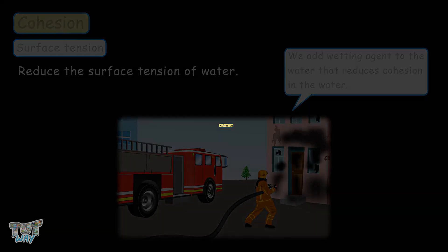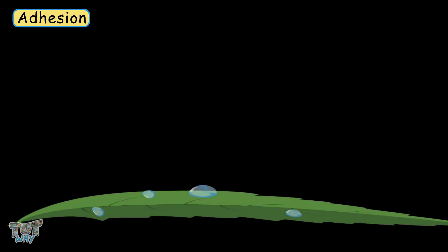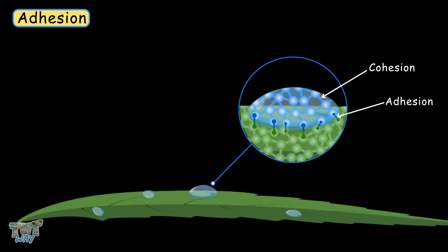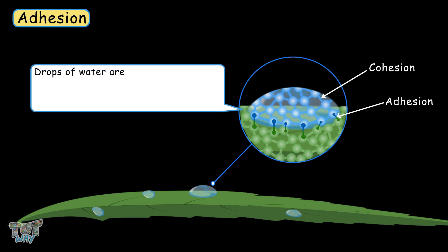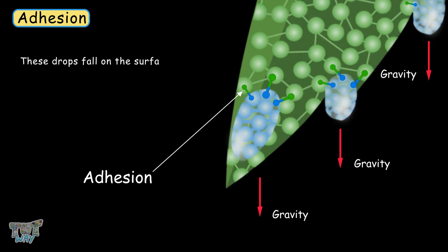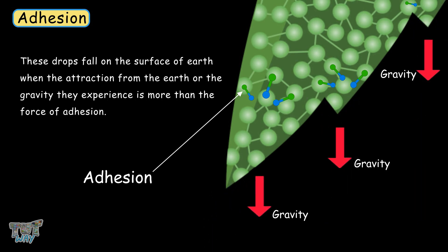Now let's learn about adhesion. Adhesion is another factor that affects flow rate. It is the attraction between the molecules of water and another substance — for example, water and a leaf. It is adhesion that keeps the drop of water stuck to a leaf. Due to cohesion, water forms a droplet, and due to adhesion between the water molecules and the leaf molecules, the water sticks to the leaf. These drops fall to the surface of the earth when gravity exceeds the force of adhesion.